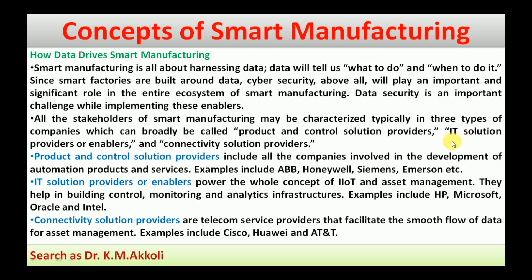These three types can broadly be called product and control solution providers, IT solution providers or enablers, and connectivity solution providers. Product and control solution providers include all the companies involved in the development of automation products and services. Examples include ABB, Honeywell, Siemens, and Emerson.